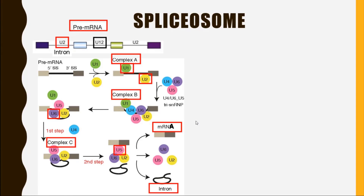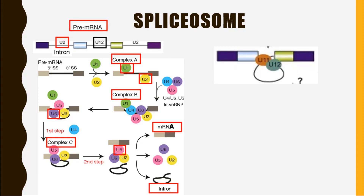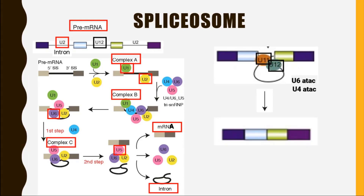U12 is a rare type of spliceosome. U11 and U12 come together along with U6 ATAC and U4 ATAC, and all these snRNAs with their proteins remove the intron from the messenger RNA. This type of spliceosome is called the minor spliceosome.